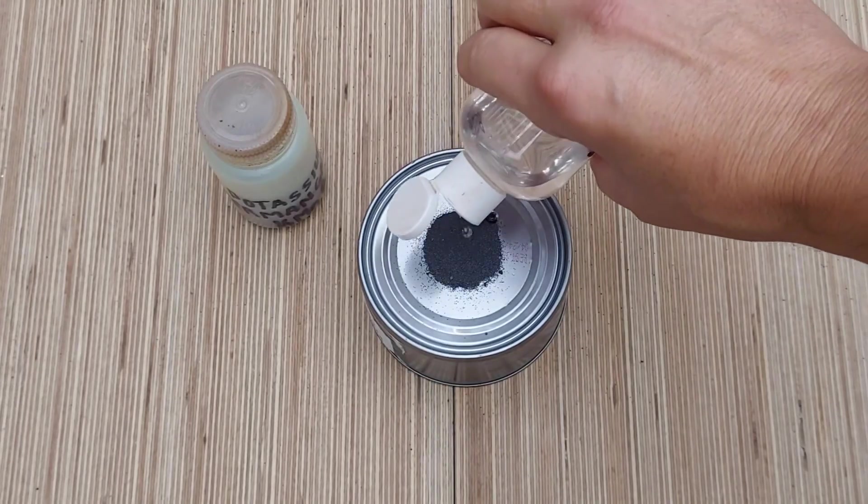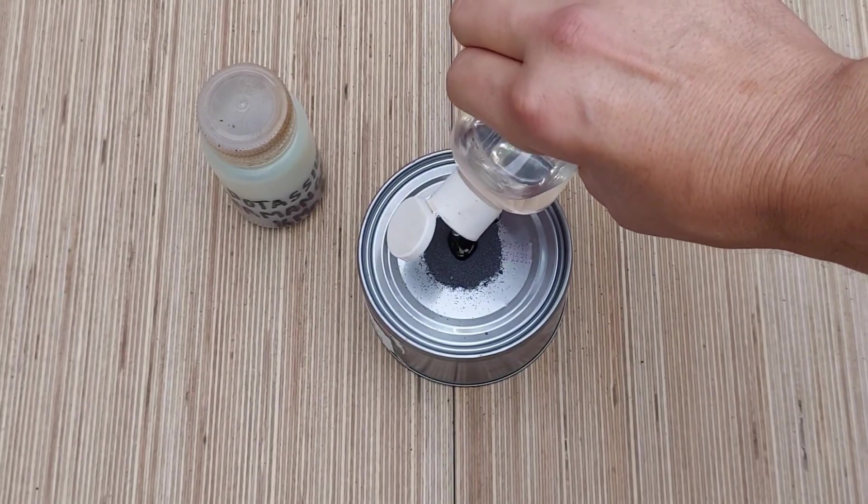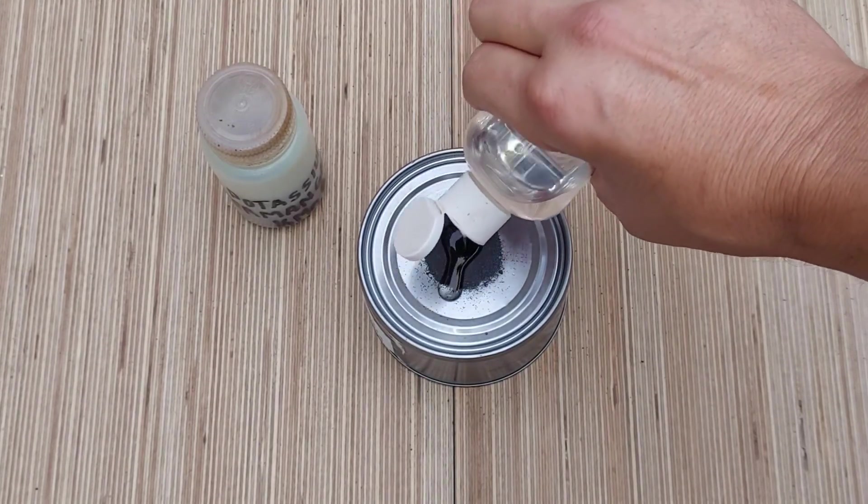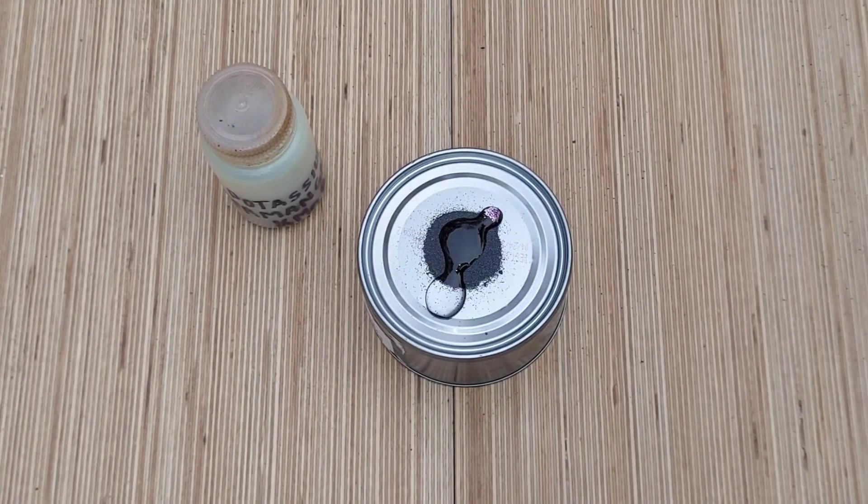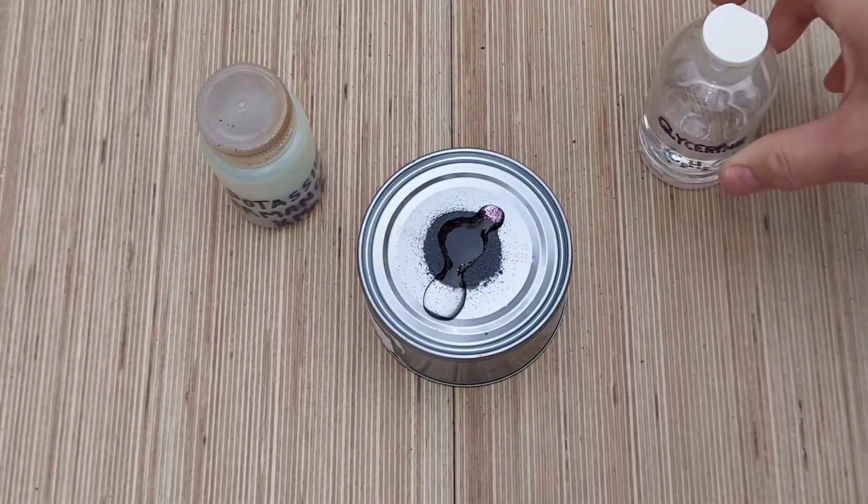The first exothermic reaction here is potassium permanganate and glycerin. It's as old as rocks. I first did this in chemistry class, probably in ninth grade.